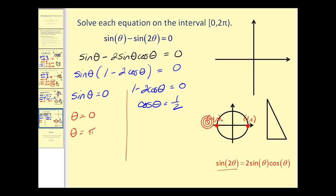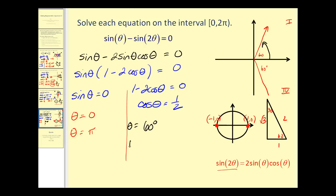For cosine θ equals one-half, using the 30-60-90 right triangle, the angle with cosine one-half is 60 degrees. Cosine is positive in the first and fourth quadrant, so we sketch a 60-degree reference angle in both quadrants. One angle is 60 degrees and the other is 300 degrees. Converting to radians: 60 degrees is pi over three and 300 degrees is five pi over three. That'll do it for this video — I hope you found it helpful. Have a good day.